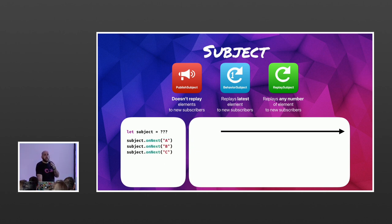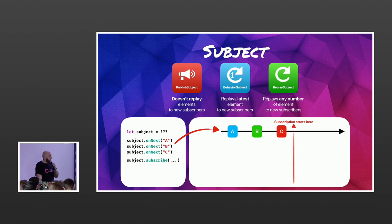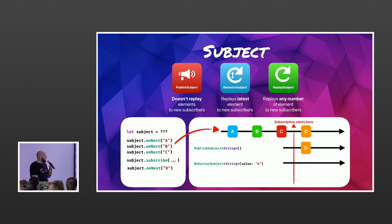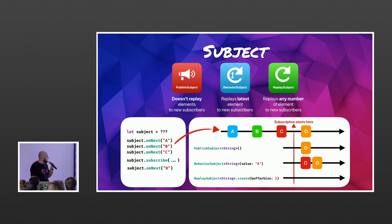Let's see a visual example. Say I have one of these subjects and I push three values — A, B, and C — then at some point I subscribe, and after subscribing I push another value D. For PublishSubject, it doesn't replay elements to new subscribers, so you only get D. For BehaviorSubject, you always get a replay of the latest element plus everything in the future, so you'd get C and D. For ReplaySubject, you define the buffer size — with a buffer of two, you'd replay B and C and then also receive D.